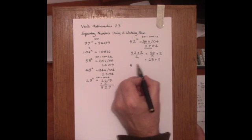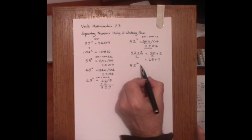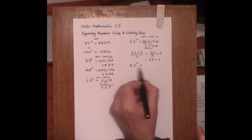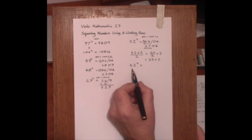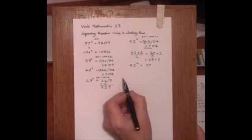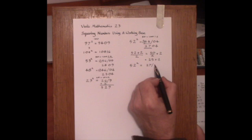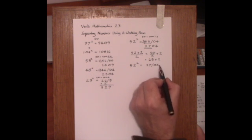We could take the 50 of 52 and halve it immediately, giving 25, and then add the surplus, making 27, and then put up the square of the surplus, 04.